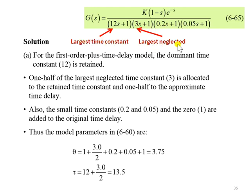And then for the FOPDT model, the dominant time constant or the largest time constant of 12 is retained. And then one half of the largest neglected time constant which is 3...